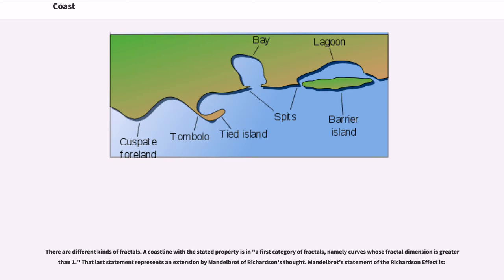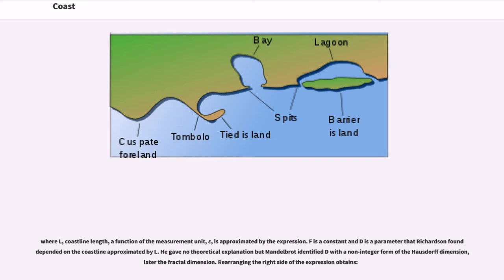There are different kinds of fractals. A coastline with this stated property is in a first category of fractals, namely curves whose fractal dimension is greater than one. Mandelbrot's statement of the Richardson effect is: where l, coastline length, is a function of the measurement unit epsilon, approximated by the expression. f is a constant and d is a parameter that Richardson found depended on the coastline approximated by l. He gave no theoretical explanation but Mandelbrot identified d with a non-integer form of the Hausdorff dimension, later called the fractal dimension.